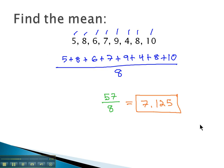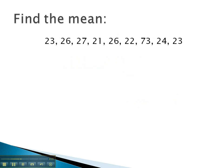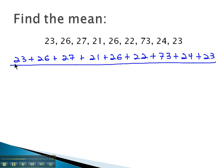Let's try another example where we're asked to find the mean of several numbers. Here, we have a larger list of numbers, but the process is the same. We'll do 23 plus 26 plus 27 plus 21 plus 26 plus 22 plus 73 plus 24 plus 23, and then divide that by how many numbers we have.